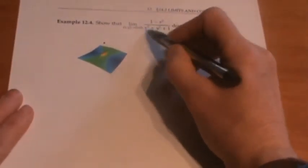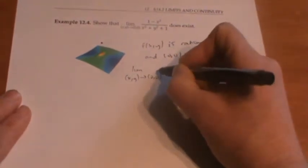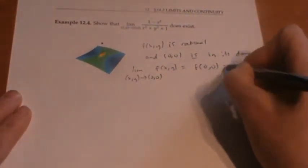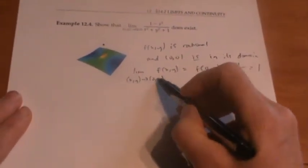I have two examples where the limit does exist. In this first one, it's easy to see the limit exists because this is a rational function and the point we're approaching does not make the denominator zero. Since f(x, y) is rational and (0, 0) is in its domain, the limit as (x, y)→(0,0) of f(x,y) is just f(0, 0) = 1/1 = 1. For any continuous function, as you approach a point in its domain, the function approaches its value and the limit exists.